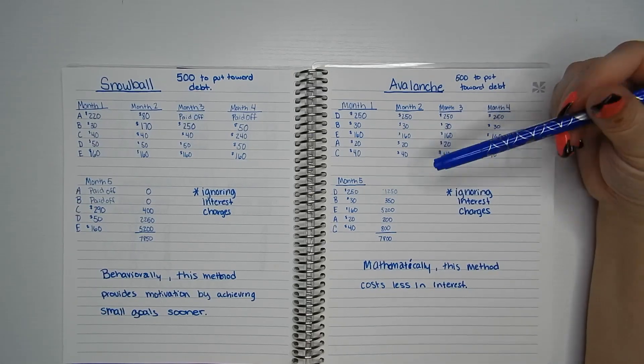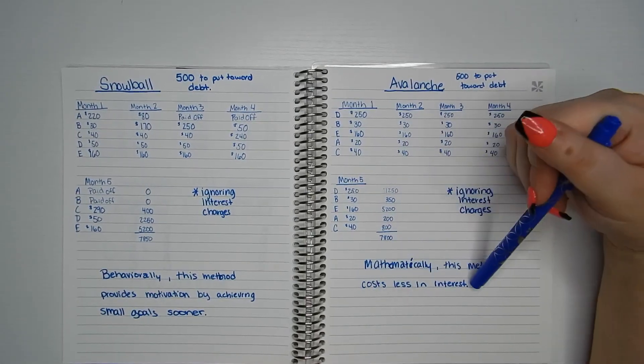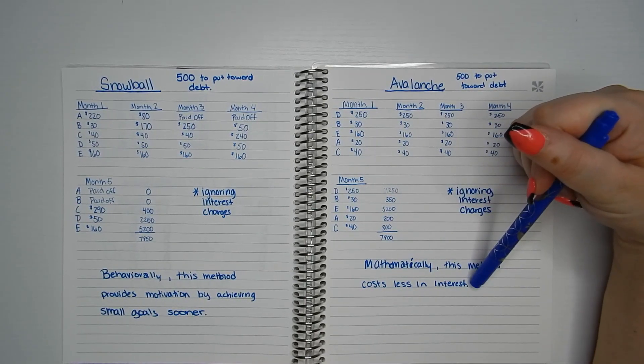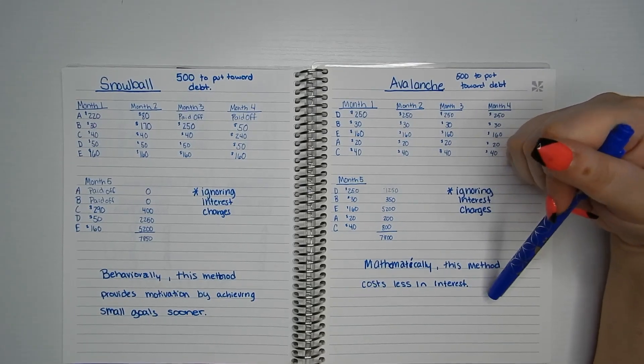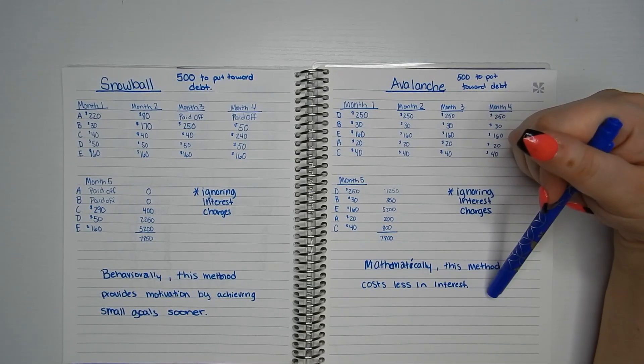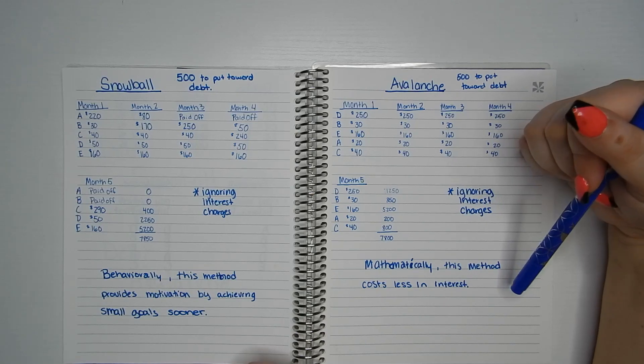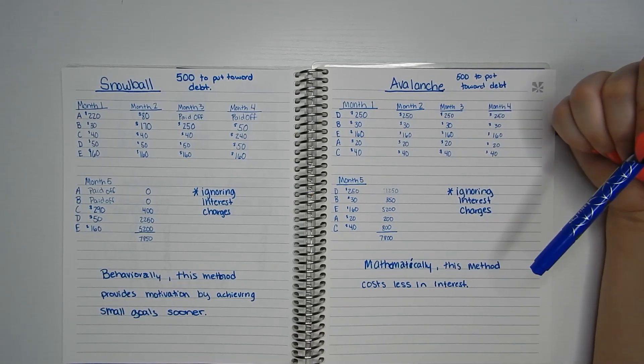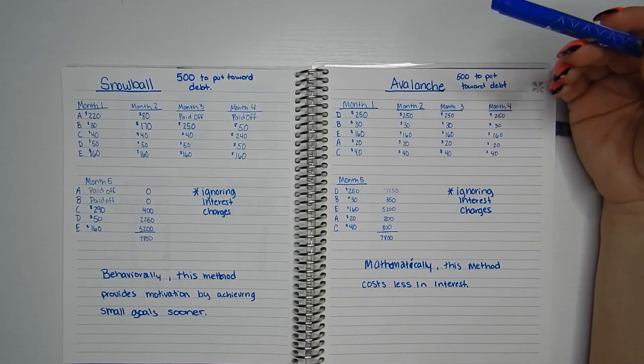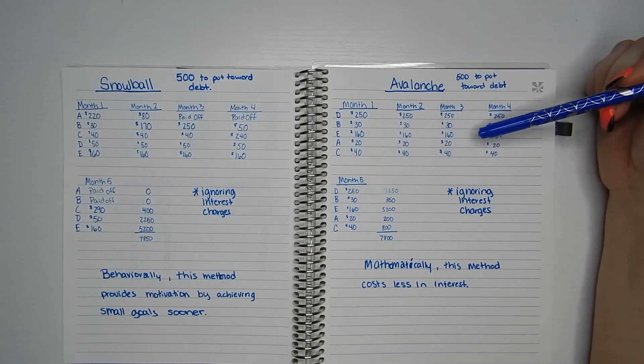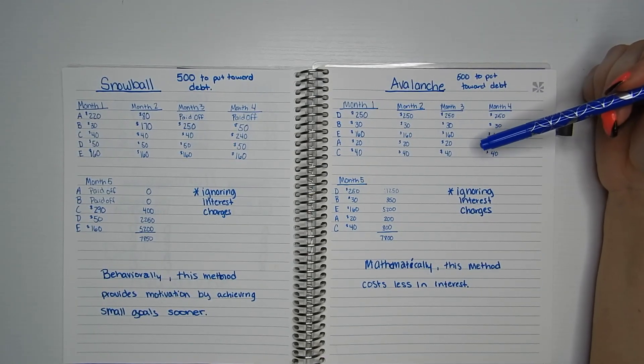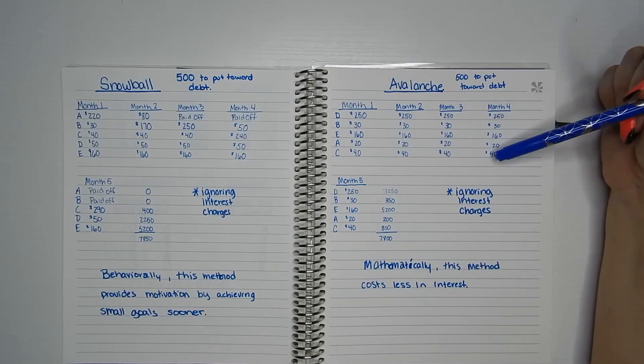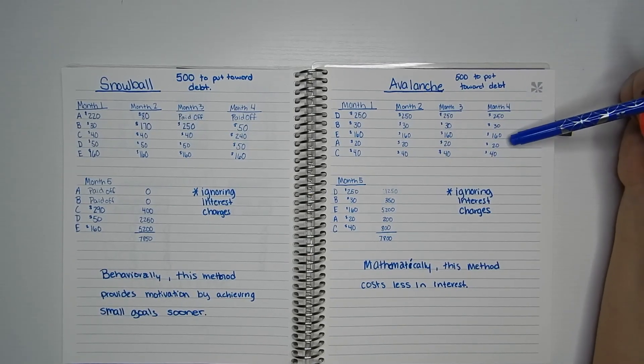So mathematically, this method's going to cost you less in interest, but behaviorally, you're not seeing those rewards. So there's more of a chance that your motivation might wane. You might get bored or distracted and not focus on your debt as much. But if math is your driving factor and you know that you're saving interest, this might be great for you.